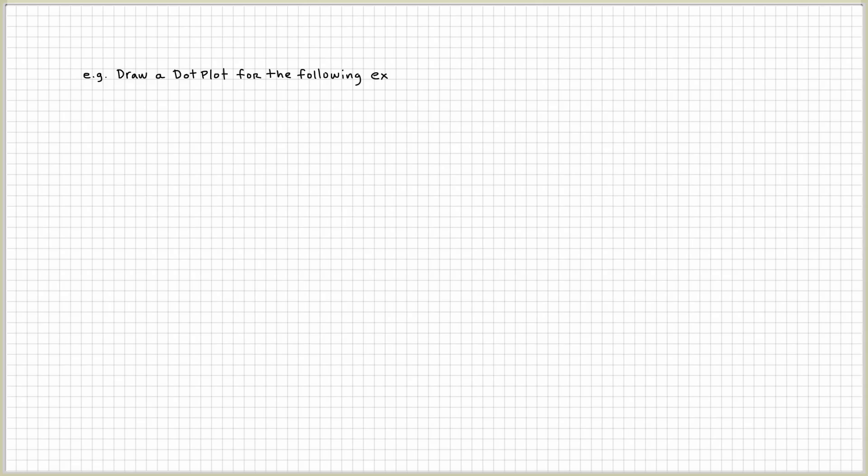Draw a dot plot for the following exit exam scores. This time, the information, the data set is in a tabular form. It's in a frequency table. Here, you can see that a score of 40, we have three scores of 40. We have, for example, seven scores of 44.